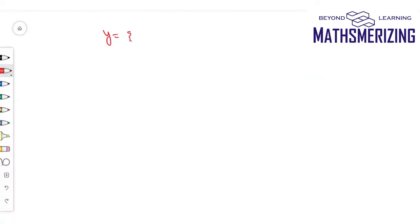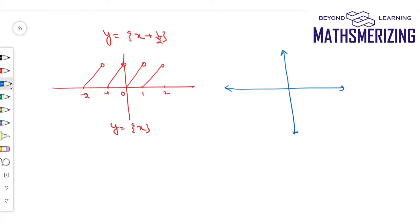I have to draw the graph of y equals fractional part of (x + 1/2). My basic graph is fractional part of x. For fractional part of (x + 1/2), I'll shift the entire graph minus 1/2 units along the x-axis. So that's the graph of y equals fractional part of (x + 1/2).